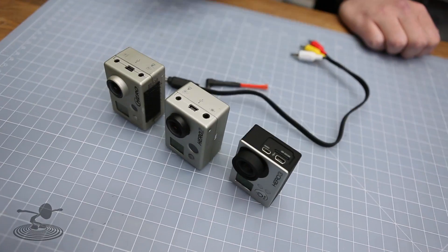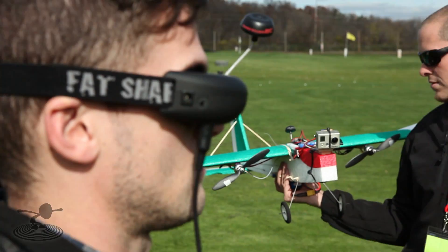Okay, so what are all these three things? These are GoPro cameras. We use them in FPV a lot. To do that you need a video out.